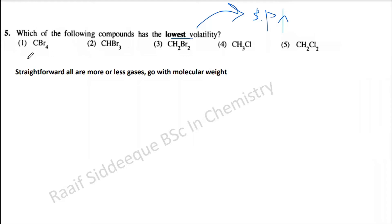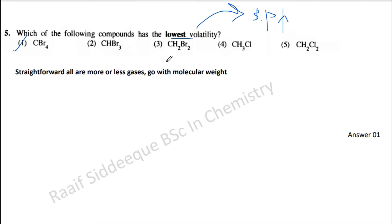CBr₄ will have the maximum molecular weight, so according to that it would have the highest boiling point. When you have this type of question, sometimes students get confused, but it is actually a very easy question. The idea is you should know the concept. You can consider this as mainly a homologous series — for example, gases — and as molecular weight increases, boiling point should increase.